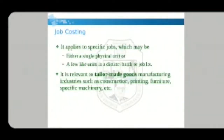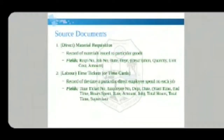Now we will talk about job costing. Job costing is applied either to a specific job, a single physical unit, or a batch of jobs. For example, if we are producing a single unit of any product we apply job costing to that unit, or if a number of products are produced in a group we apply job costing to that job lot or batch. It is relevant to tailor-made goods in manufacturing industries such as construction, printing, furniture, and specific machinery.